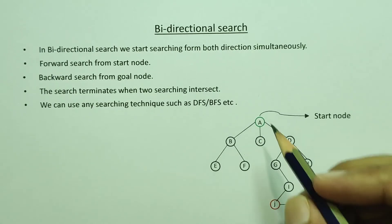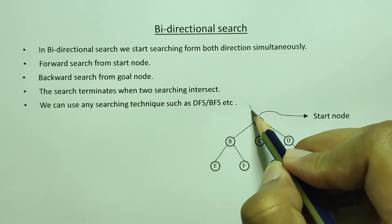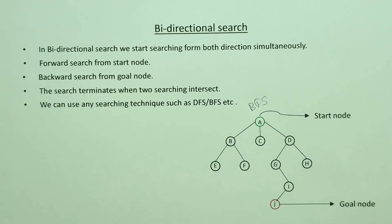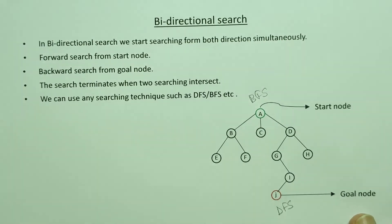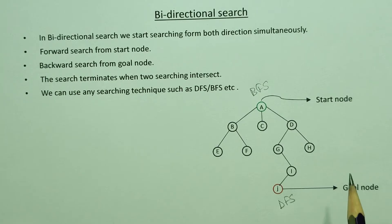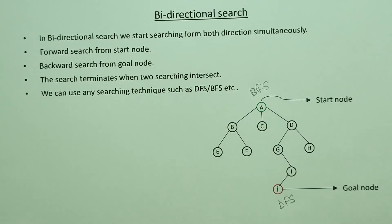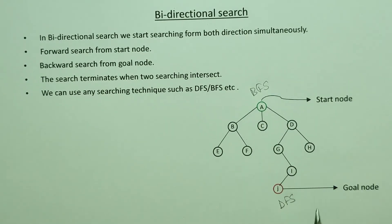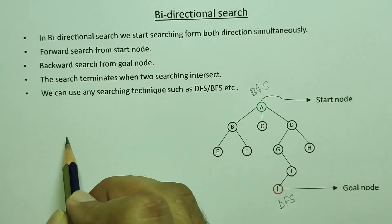The goal node is J. From the starting node, BFS is applied; from the goal node, DFS is applied. We can see that the graph follows the same rules as the search algorithm.